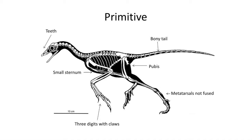The fourth primitive trait is a long bony tail. In all living birds, the tail is composed of elongated feathers and there are no caudal vertebrae or bony tail. Archaeopteryx, like earlier dinosaurs, exhibited a bony tail that may have served a role in muscle attachments for the hind leg.